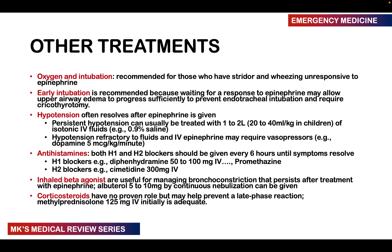Hypotension refractory to IV fluids and IV epinephrine may require vasopressors such as dopamine at 5 mcg per kg per minute. Cover this patient on an antihistamine, preferably an H1 and H2 blocker, given every six hours until symptoms resolve. An H1 blocker such as diphenhydramine can be given at 50 to 100 mg IV; in some cases promethazine is what is found in most hospitals. Cimetidine can also be given at 300 mg IV. Inhaled beta agonists such as albuterol can be used to nebulize the patient continuously with about 5 to 10 mg for persistent bronchoconstriction.